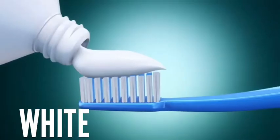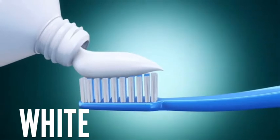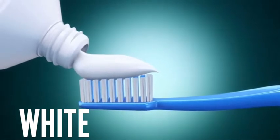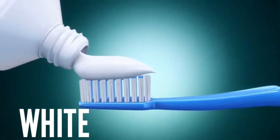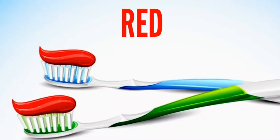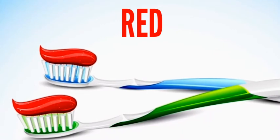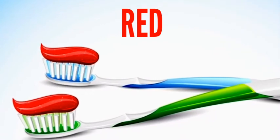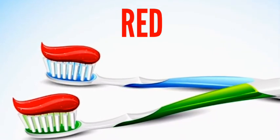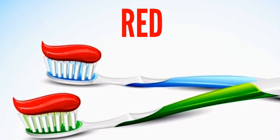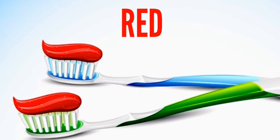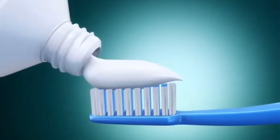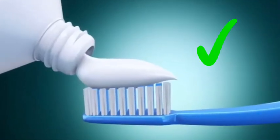The white color contains a chemical in your toothpaste that protects you from cavities, while the red color present in the toothpaste contains a different kind of chemical that gives you a good smell.